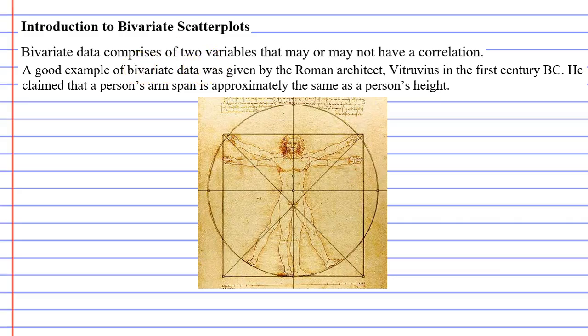If you're not sure what a variable is, a variable is basically something that varies or changes. These variables may or may not have a correlation.